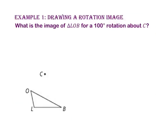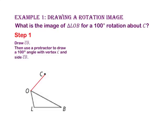In Example 1, we will draw a rotation image. What is the image of triangle LOB for a 100 degree rotation about point C? For step 1, let's draw segment CO, then use a protractor to draw a 100 degree angle with vertex C and side CO.